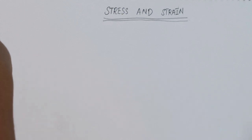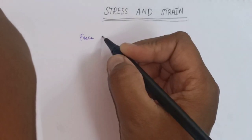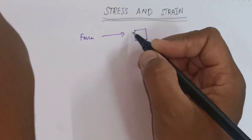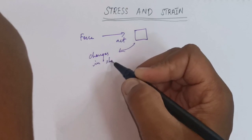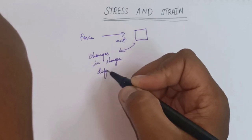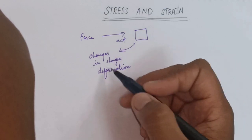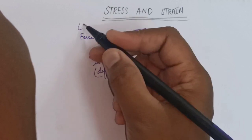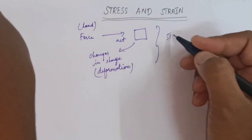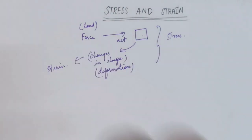In simple terms, if a force acts on a body and produces changes in shape or deformation, before the object changes shape, a pressure is created within the object to resist this external force or load — that is called stress. The changes in shape is called strain.